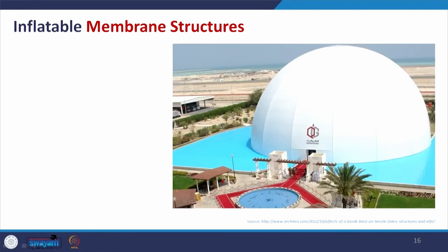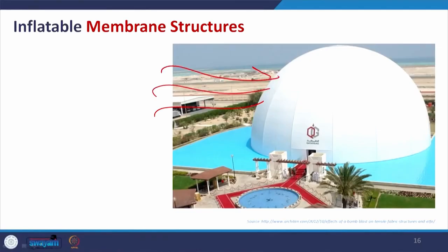Coming to the last category — inflatable — where the structure is formed with the help of air. An initial form is made and then air is injected to maintain the shape. This is a very important structure for temporary use; the main advantage is that once the purpose is solved, it is very easy to dismantle: remove the air, fold it, and transport to another place. One disadvantage is that due to heavy wind the initial form may be altered, and interior fitting of lighting and other things needs to be taken care of.